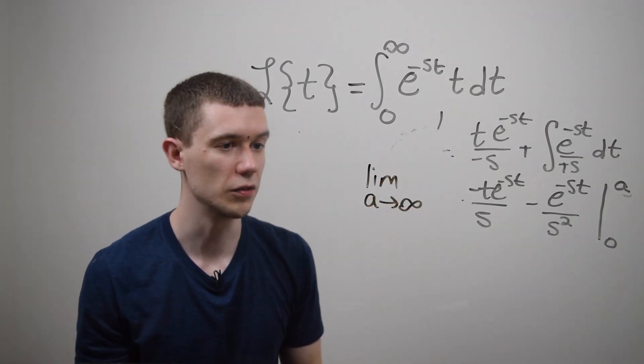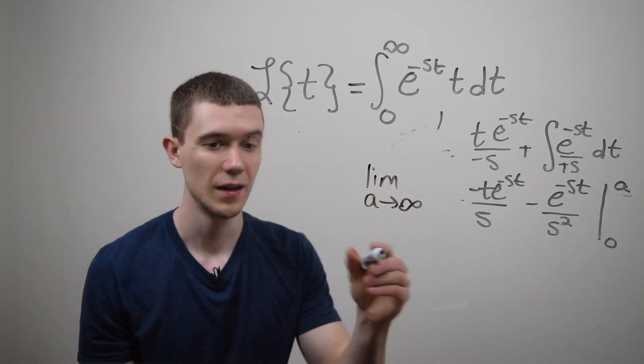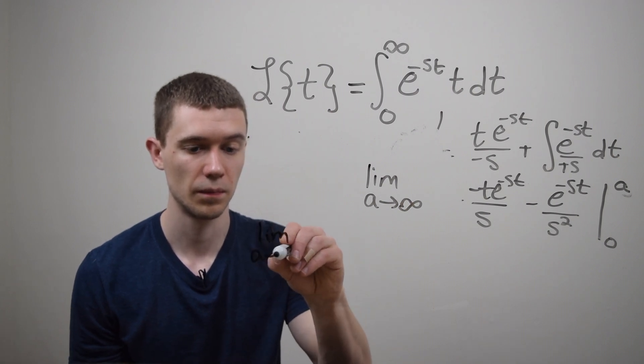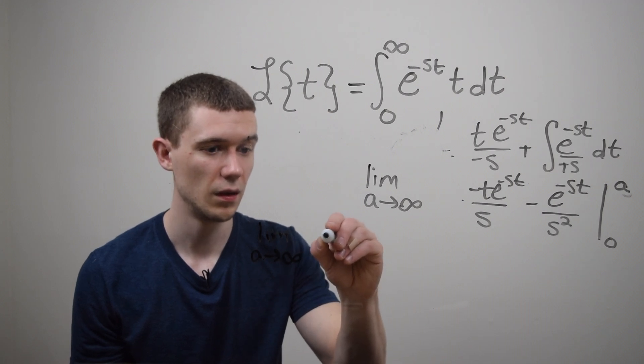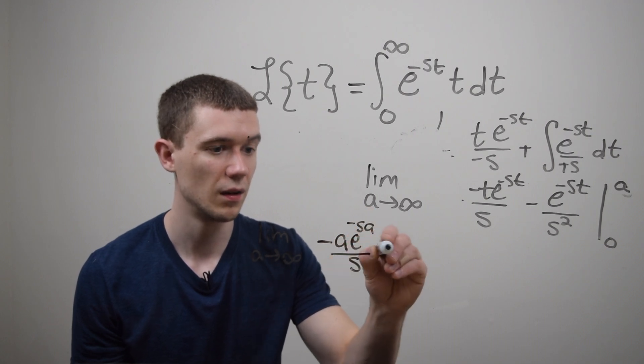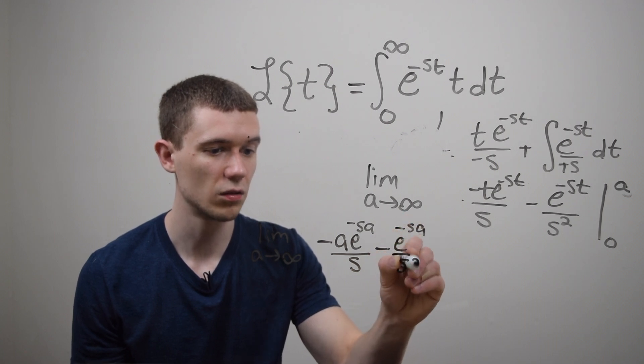Okay now let's evaluate this using the fundamental theorem of calculus. So that says plug in the upper so that would be minus a e to the minus sa over s minus e to the minus sa over s squared